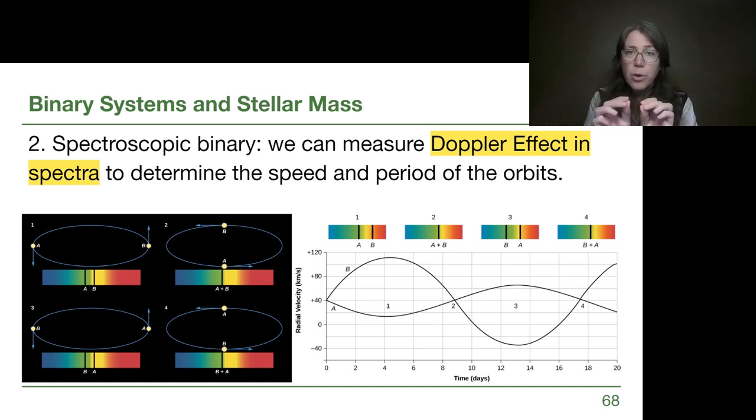And when we see that shifting back and forth in Doppler effect, it is because those stars are physically moving towards us and away from us over time. This data set is showing two stars in a spectroscopic binary. On the right side, we are showing the curves that have already taken the Doppler effect, how much shift there is, and turned it into a speed.